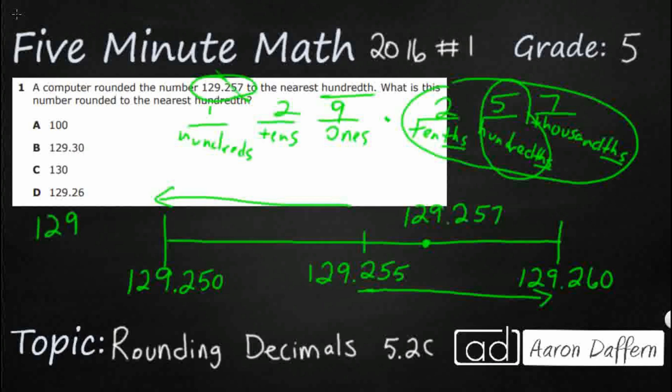129 and it's .257. Well, you look at the place that it's rounding to, so hundredths. So you underline it, and then you always look directly to the right, circle that digit, seven.